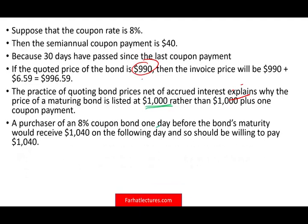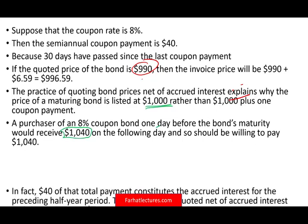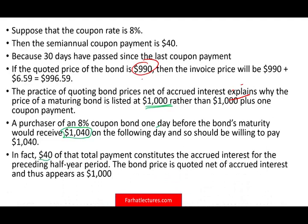The practice of quoting bond prices net of accrued interest explains why the price of a maturing bond is listed at $1,000. A purchaser of an 8% bond one day before the bond matured would receive $1,040 — because the following day the buyer gets $1,040 anyway. In fact, $40 of that total payment constitutes the accrued interest for the preceding half-year period. The seller collects their accrued interest upfront, and the buyer then receives the full principal plus interest at maturity.